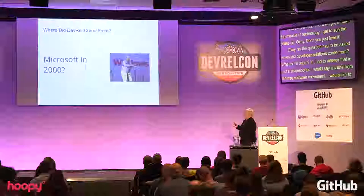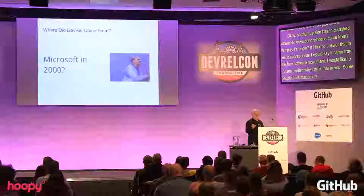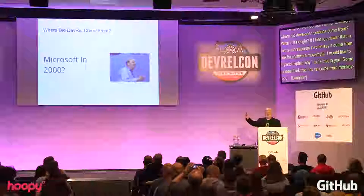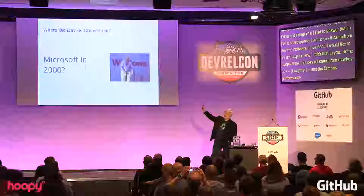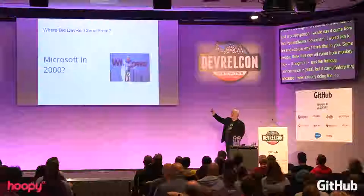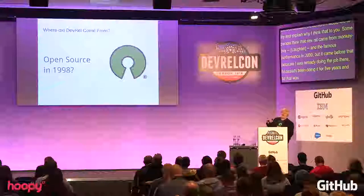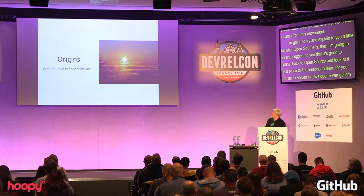Some people think that DevRel came from the famous 'monkey boy' performance in 2000, but it came before that — I was already doing the job, I'd already been doing it for five years. Open source wasn't coined until 1998, and again I was doing the job in 1995. I do think it came from this movement, and I'm going to explain what open source is and suggest it's good to connect back to it to find lessons for your job in developer evangelism and developer relations.